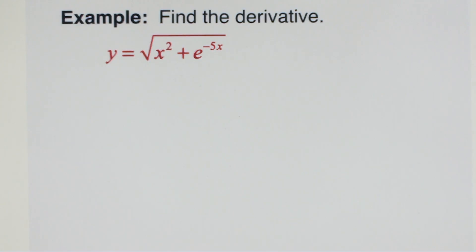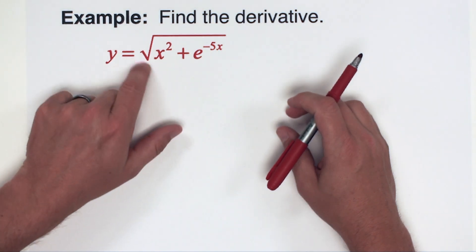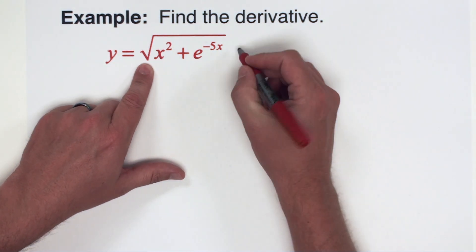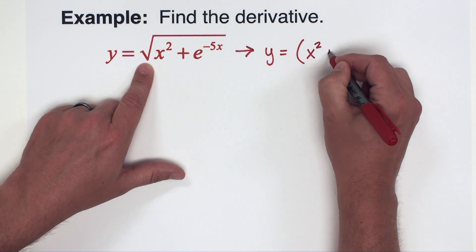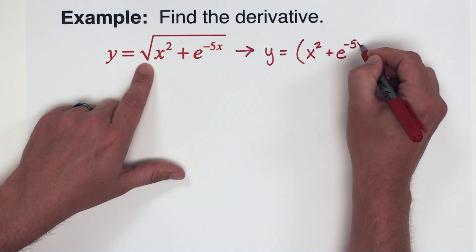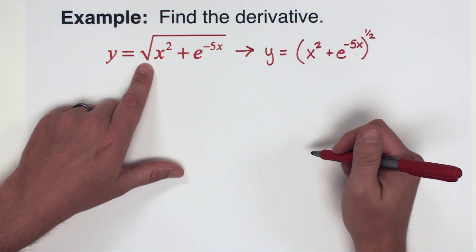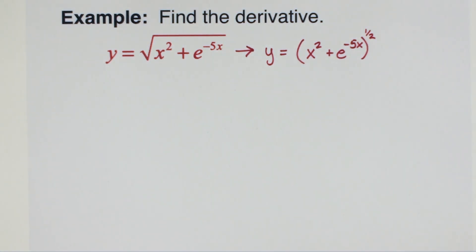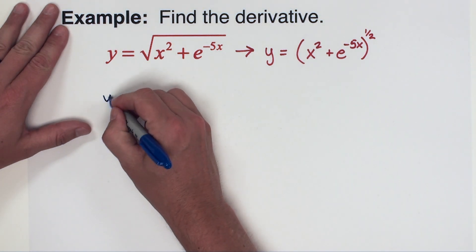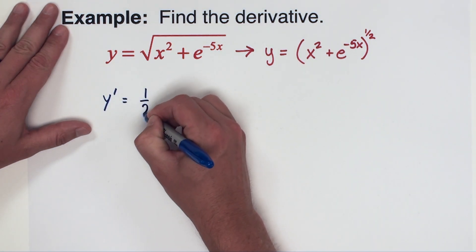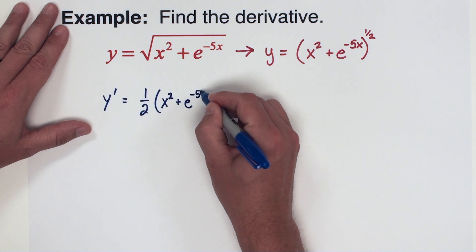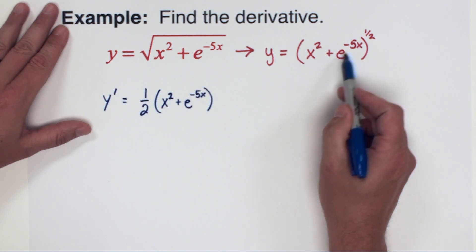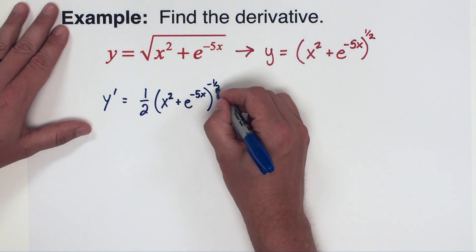The final example starts with a radical function — a square root. As always, we rewrite it: y equals the quantity x squared plus e to the negative 5x, raised to the 1/2 power. The 1/2 power is on the outside, so I start with that: 1/2 comes to the front, the inside x squared plus e to the negative 5x stays, and the power becomes negative 1/2.